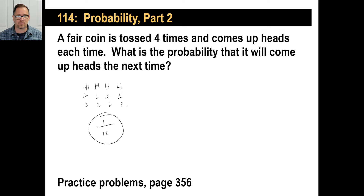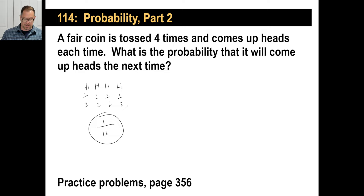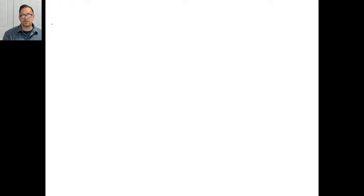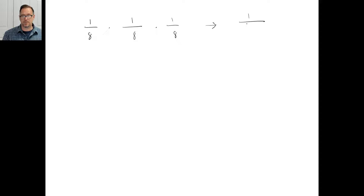Look on page 356 and try these. The spinner is spun three times. What's the probability it will stop on a three, then a five, then a one in that order? The spinner has eight sections, so the probability of hitting three is one out of eight, hitting five is one out of eight, and hitting one is one out of eight. Multiply them: one times one times one on top, and eight times eight times eight equals 512 on the bottom. So it's one out of 512 — about 0.195%.